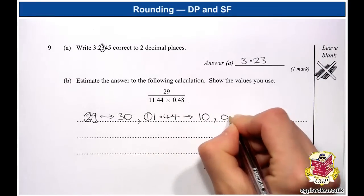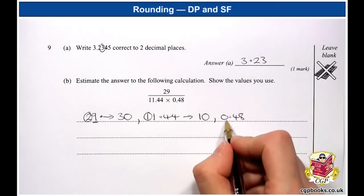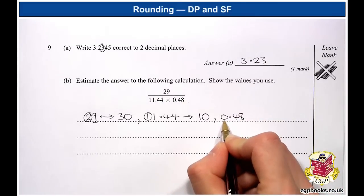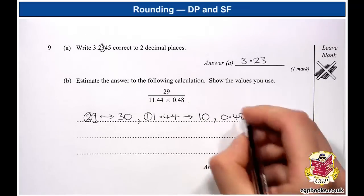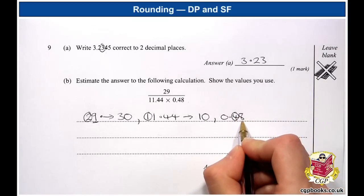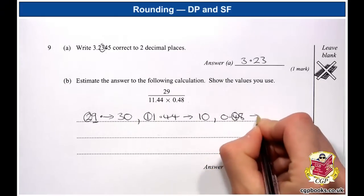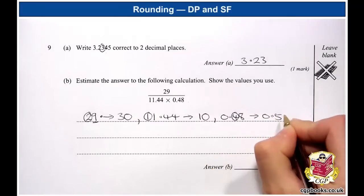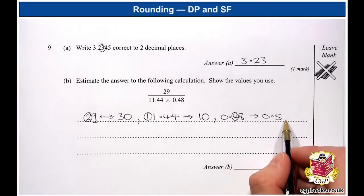Lastly, 0.48. This time we've got a 0 at the start, so we ignore that and hop along to the 4. So that's our last digit. The decider is 8, so that means we round up and we get 0.5. And there's no need to add any extra zeros this time.